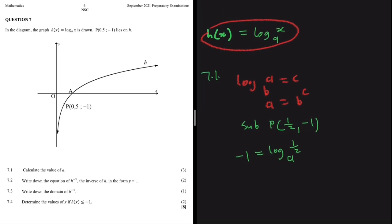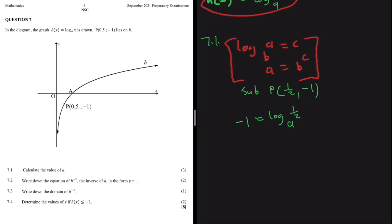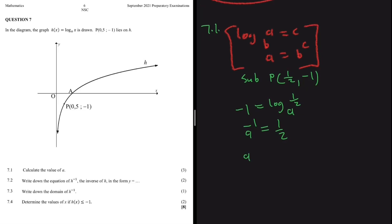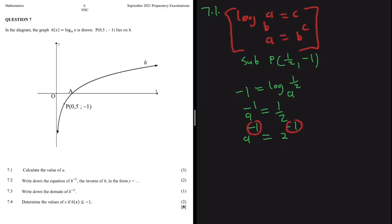Using the log rule, we can say a to the minus 1 equals 1/2. To find a, we rewrite 1/2 as 2 to the minus 1. Since both exponents are -1, we can drop them and equate the bases: a equals 2. So our equation H(x) becomes log base 2 of X.